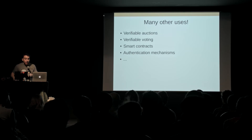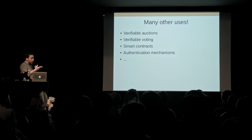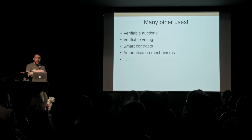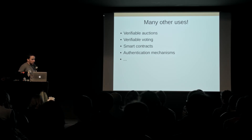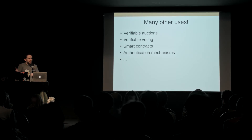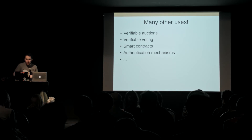There are many other uses. Verifiable auctions, for instance — people contributing private bids, and you want the winner to emerge without necessarily revealing to other parties who was bidding. Verifiable voting, with obvious uses in governments and general voting systems. Smart contracts — a few of you might have applications there. And even authentication mechanisms: you submit a password to a website and you don't want to give them your actual password — you can think of proving a pre-image of a hash as a very basic kind of proof. And plenty of other things.